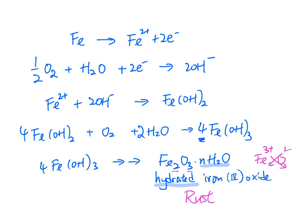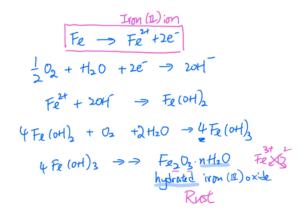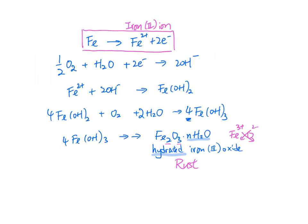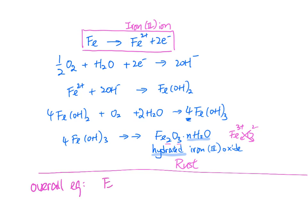What you need to remember: the most important first equation is that iron loses two electrons to form Fe2+. The second key thing is the overall equation: Fe + O2 + H2O → Fe2O3·nH2O. This overall equation is very important. Remember the coefficient 4 — if you remember 4, the rest of the balancing follows easily.